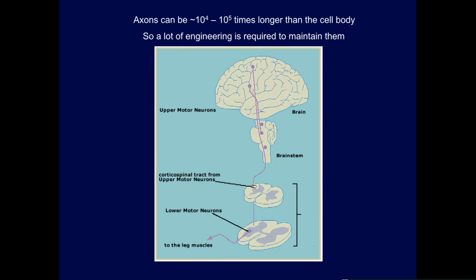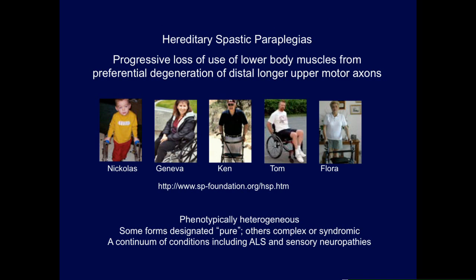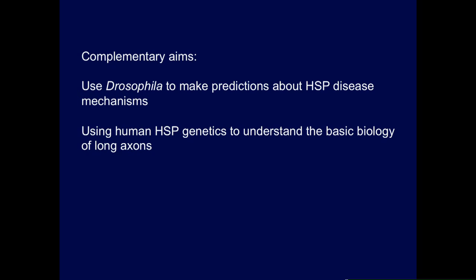You might expect diseases to result from that susceptibility to defects, and you see that in the hereditary spastic paraplegias, where the longer motor axons in the corticospinal tract are preferentially susceptible to degeneration. We're interested in two aspects of this: firstly, using Drosophila to make predictions about hereditary spastic paraplegia disease mechanisms if we can study the HSP genes in Drosophila, but also conversely using HSP genetics to understand the basic biology of long axons.